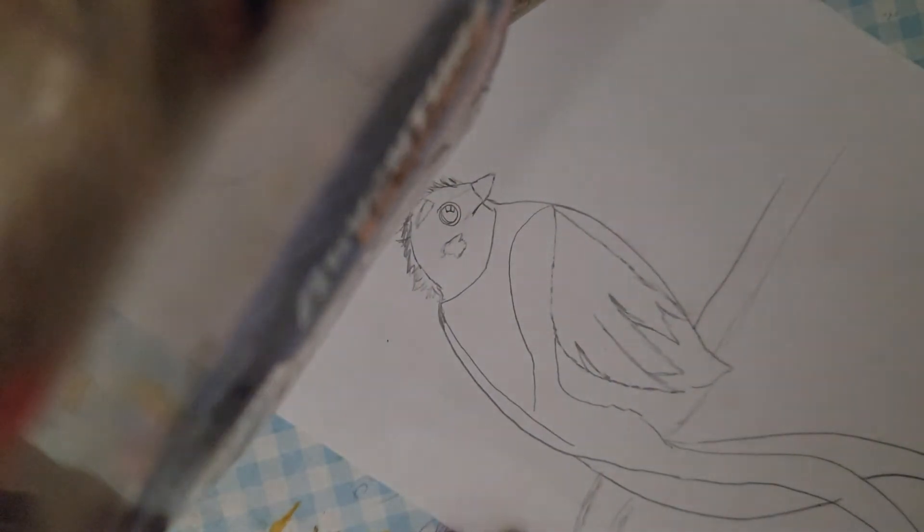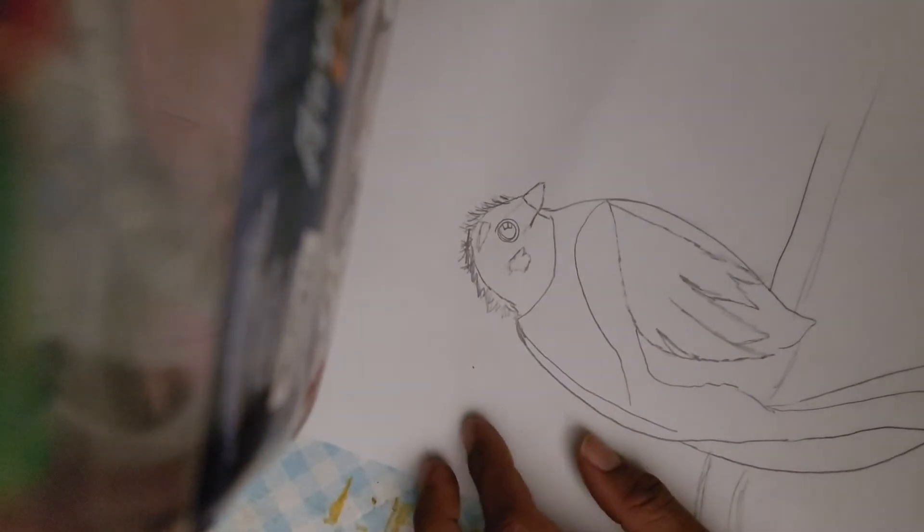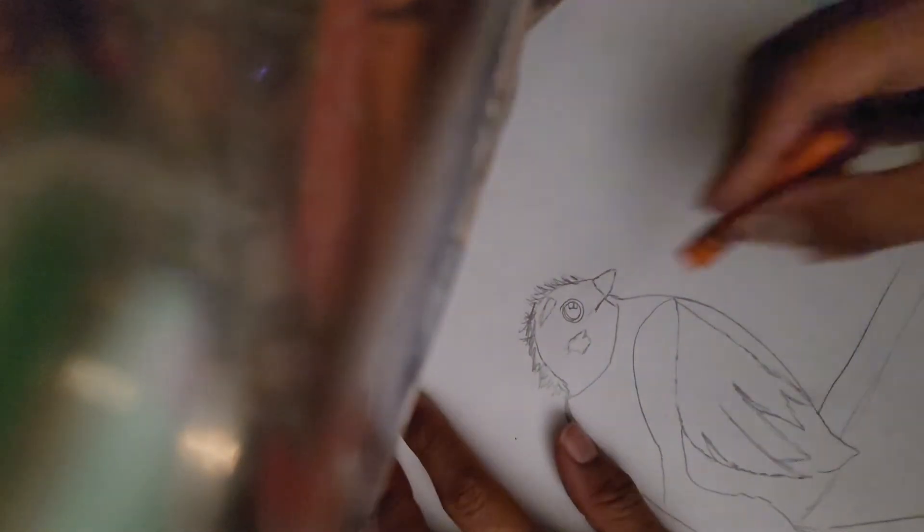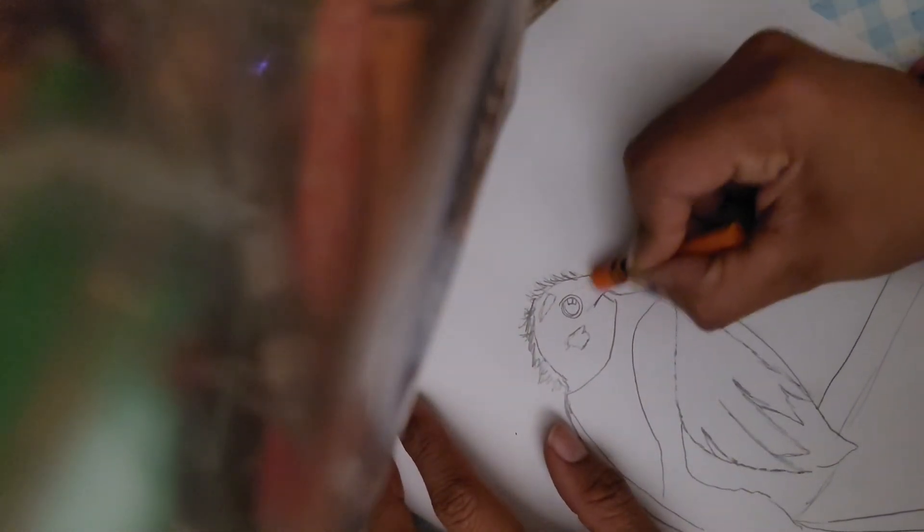And I'm going to use some colors. We're going to use some of these colors. I know that its beak is going to be like orangish, it should be yellow, but I'm going to use a little bit of orange because I couldn't find the yellow.